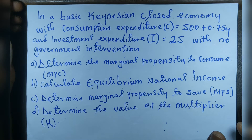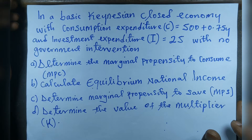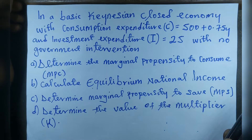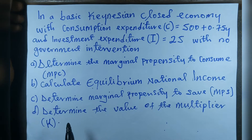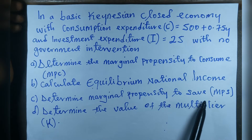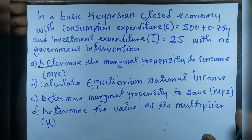Welcome to another session of Sam's economics tutorials. In today's video I'm going to show you how to calculate the value of marginal propensity to consume, that's MPC, calculate the equilibrium national income, calculate the marginal propensity to save, and lastly determine the value of the investment multiplier.